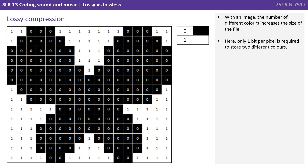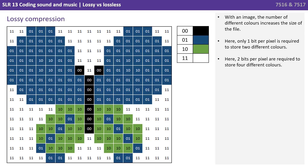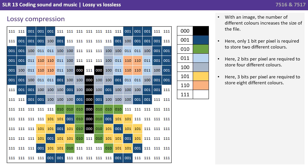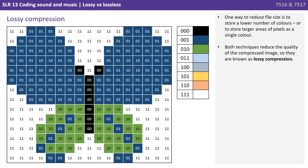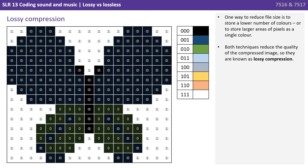With an image, the number of different colours increases the size of the file. Here we're only using one bit per pixel to store two different colours — white and black. Here, two bits per pixel are required to store four colours. And here, three bits per pixel are required to store eight colours. One way to reduce file size is to store a lower number of colours, or to store larger areas of pixels as a single colour.